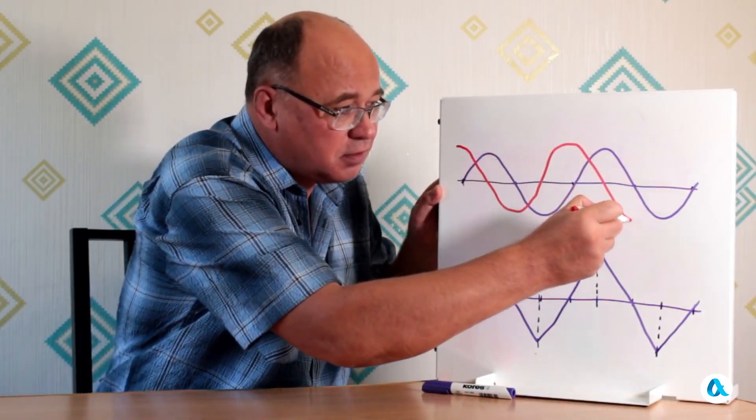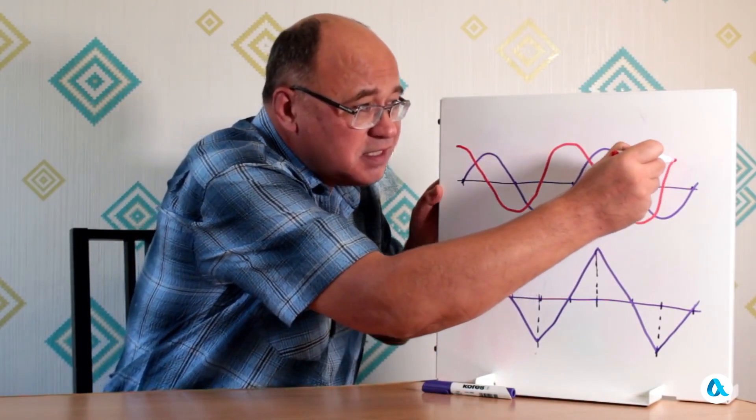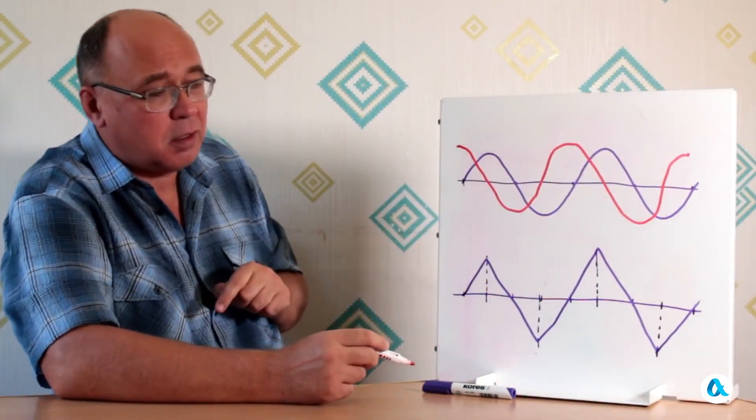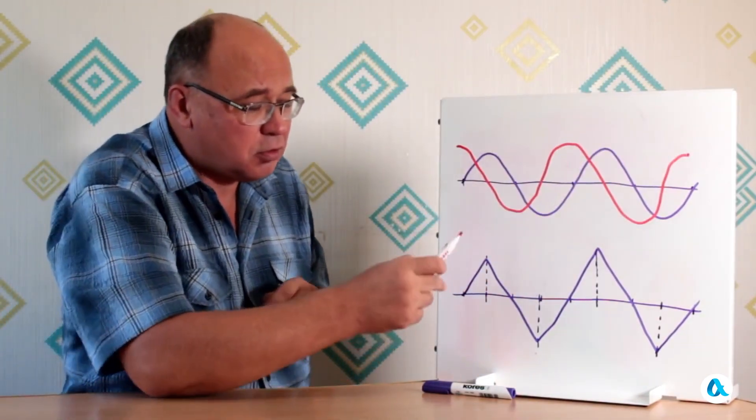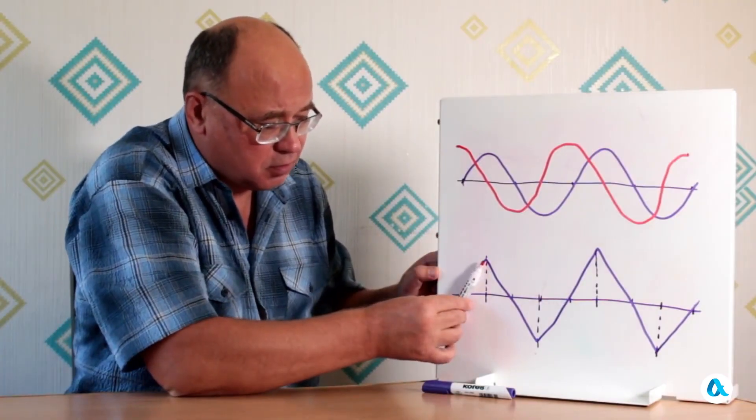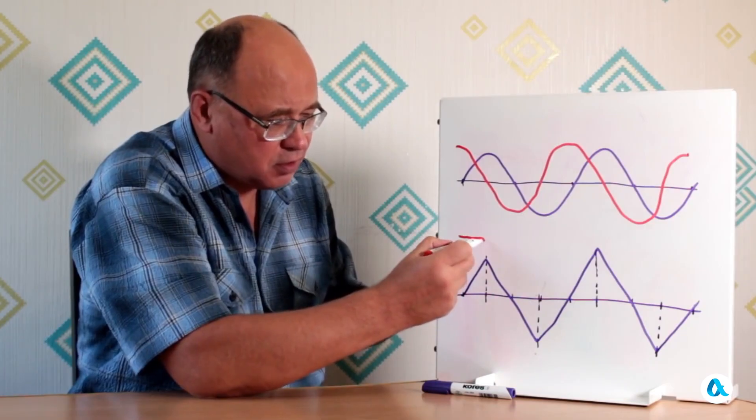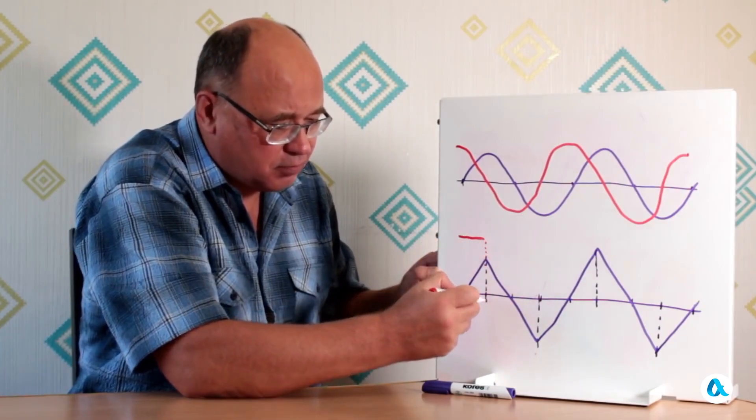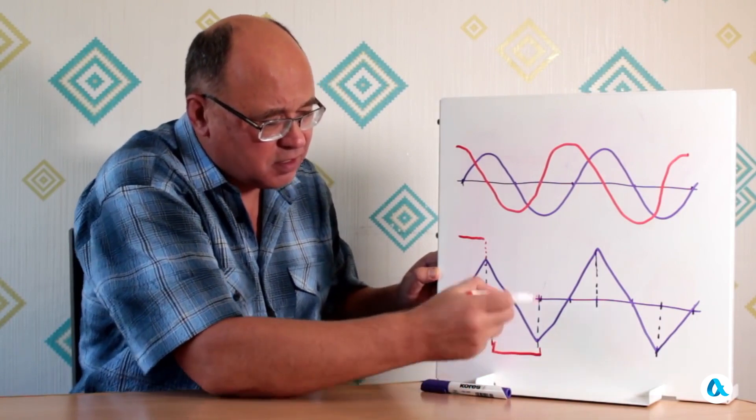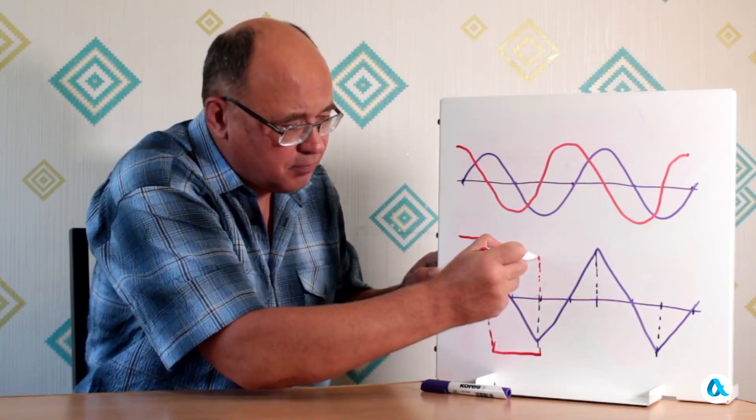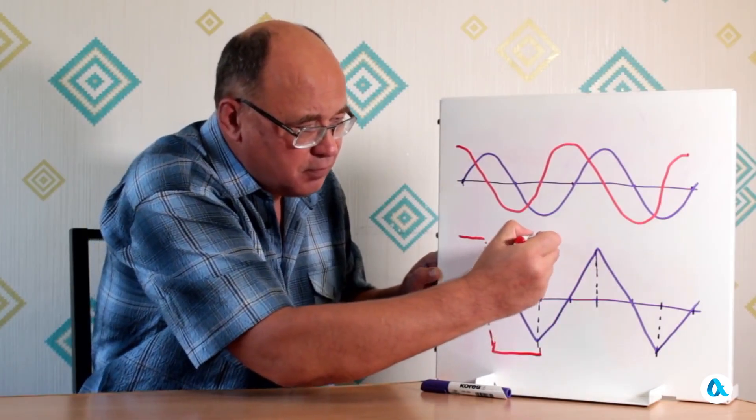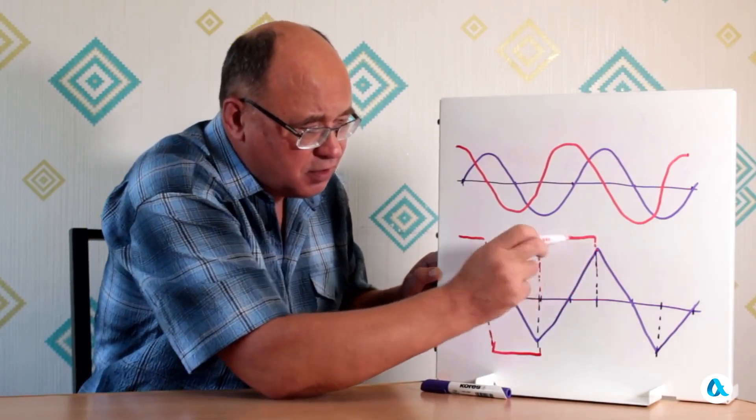But in the case where the voltage changes as a sawtooth wave, here it increases at a constant rate, which means the current is constant and positive. Then the voltage decreases at a constant rate and likewise the current is constant and negative. In this section it rises again, the current is again positive and constant. We get this kind of step-like dependence.